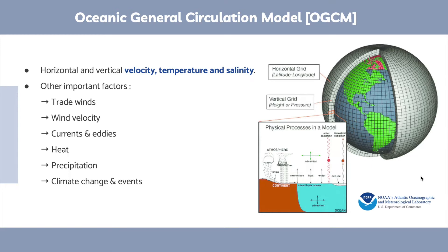I'd like to introduce some specific variables and terms. The first one is OGCM, or Oceanic General Circulation Model. It basically contains horizontal and vertical data of the ocean circulation, including velocity, temperature, and salinity. These factors influence how the ocean moves and how currents transport particles around the world, along with other factors like wind, eddies, heat, precipitation, and climate change.